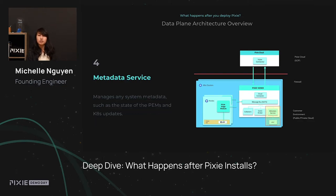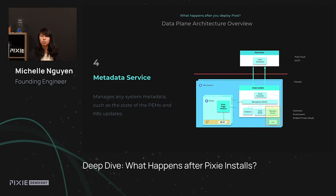Next is the metadata service. The metadata service manages all of the metadata running in the system. This includes metadata about the state of your Vizier running on the cluster, and also information about the Kubernetes updates that is given by the Kubernetes API. Similar to Kubernetes, we store all of our metadata in etcd, which is the key-value store.